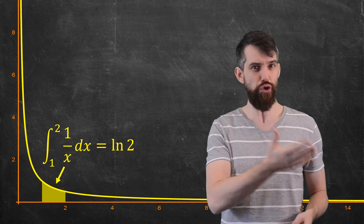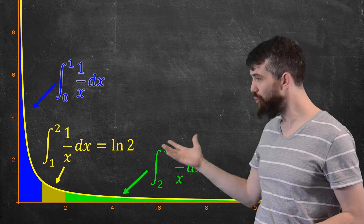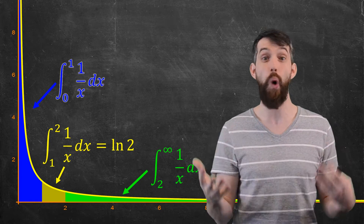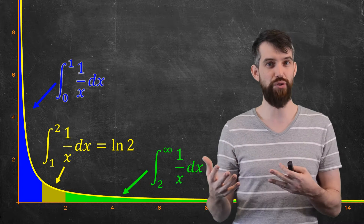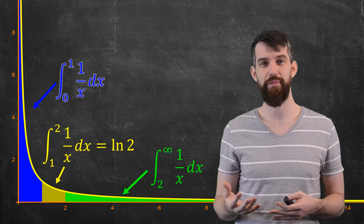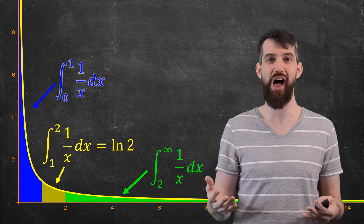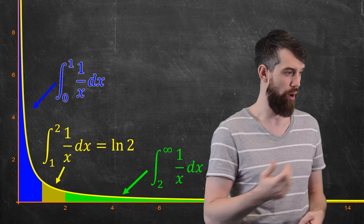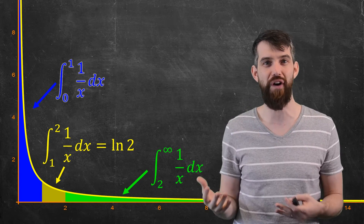However, there are two other regions of interest. There's the blue region — the integral from 0 to 1 of 1 over x dx — and the integral from 2 up to infinity of 1 over x dx. Several questions arise: how are these even defined? How do we define integration when we have a discontinuity like division by zero, or when the domain goes all the way off to infinity?